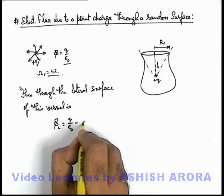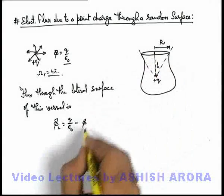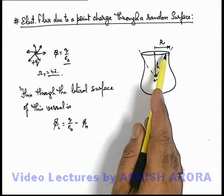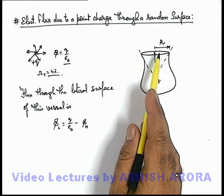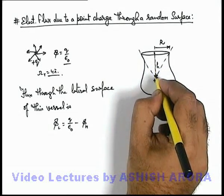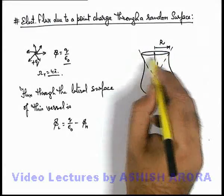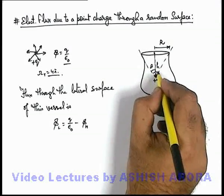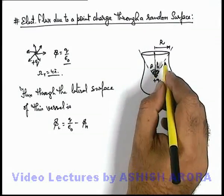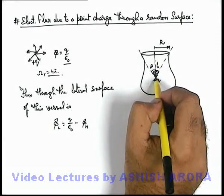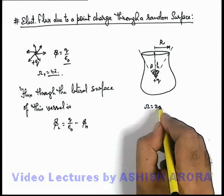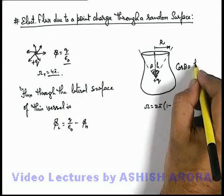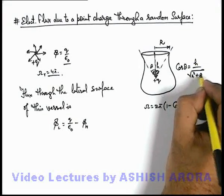Flux lateral can be written as q by epsilon-not minus flux through the mouth of this random shaped vessel, which is a circle of area πr². In this situation, if we join the location of the charge with the circumference of this mouth, it will form a cone with half angle θ. Corresponding to this half angle θ, we find out the solid angle enclosed by the lateral surface of the cone at the vertex, which can be written as 2π(1 − cos θ). From this triangle we can write cos θ as h by √(h² + r²).